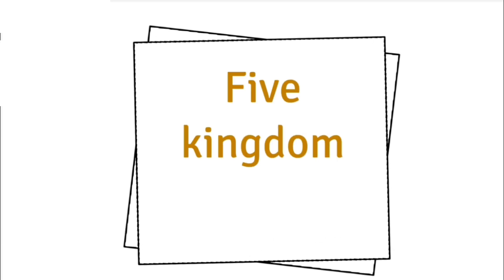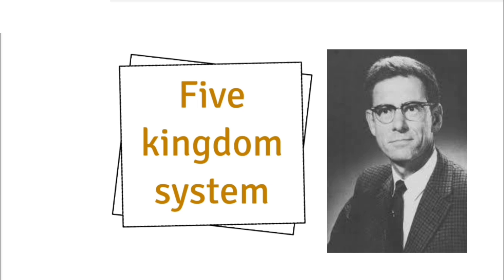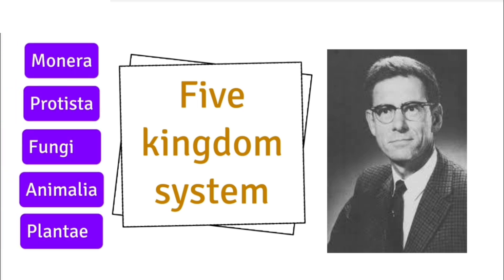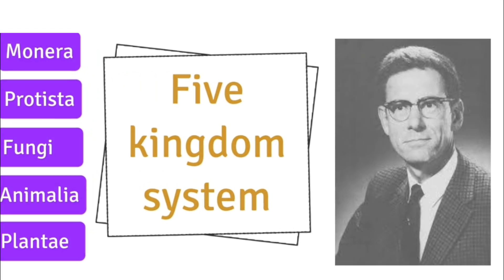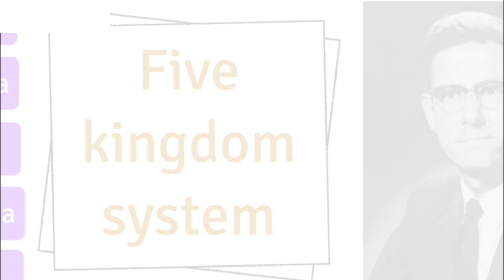Currently, one of the most widely accepted systems is the Five Kingdom Classification, proposed by Robert H. Whittaker in 1969. According to this system, all organisms are divided into five kingdoms based on three main criteria. Let's explore these criteria first, and then we'll begin classifying organisms together, step by step.